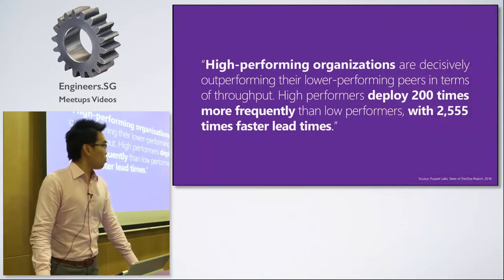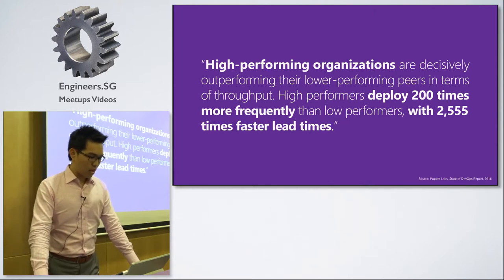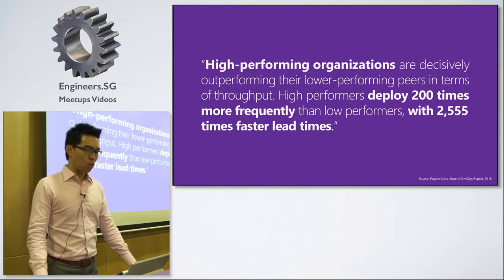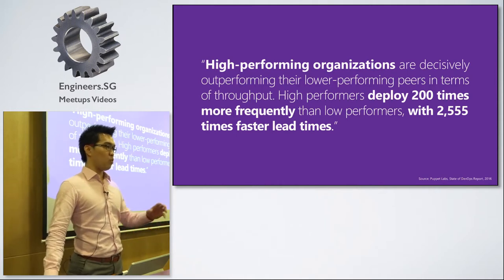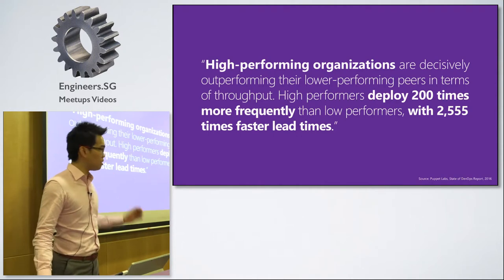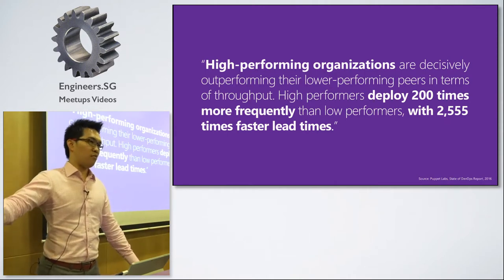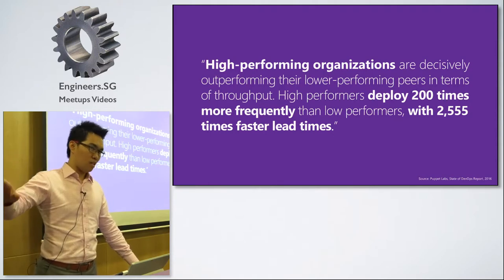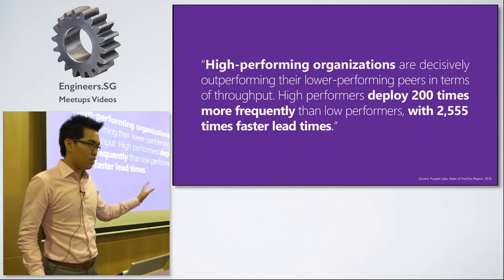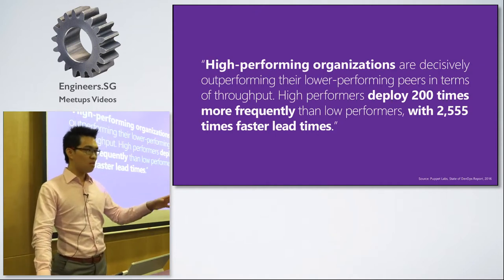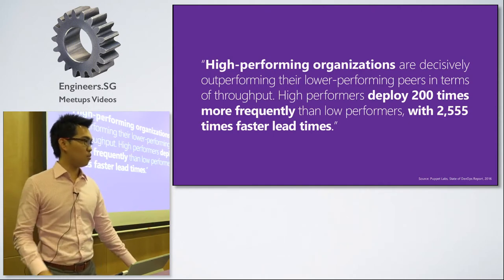This is a report done by Puppet Labs a couple of months ago. It talks about how high-performing organizations, compared to low performers, are able to deploy 200 times more frequently and deploy faster. There's this term called lead time — from the time you check in your code to the time it shows up in your production environment. The number here is quite astounding: 2,500 times faster. So if a high-performing team takes one hour for lead time, a low-performing team will take three months.